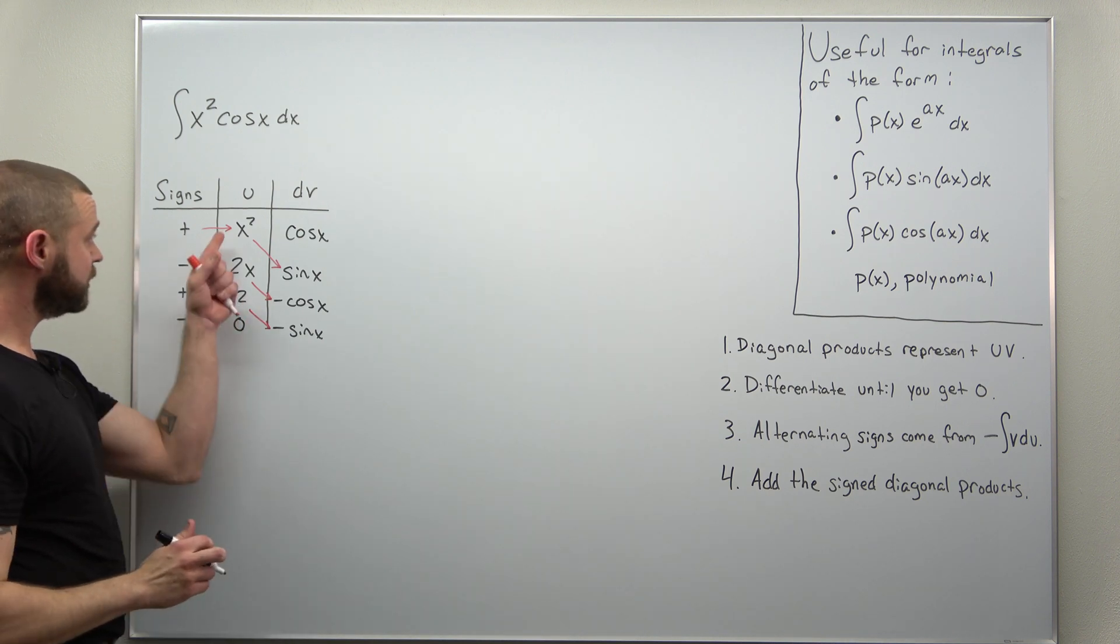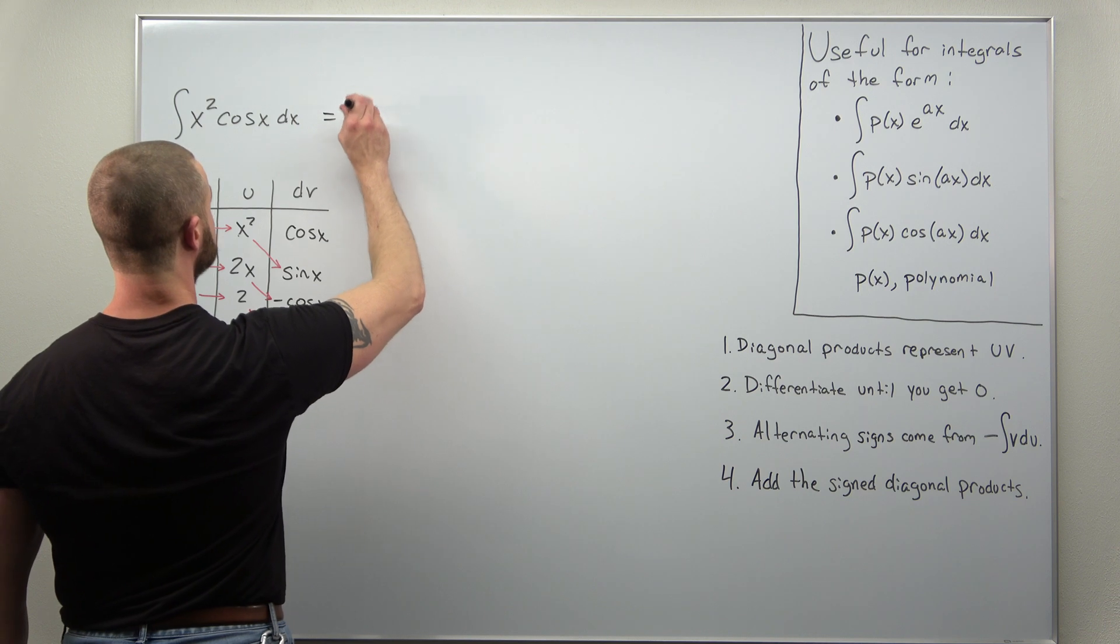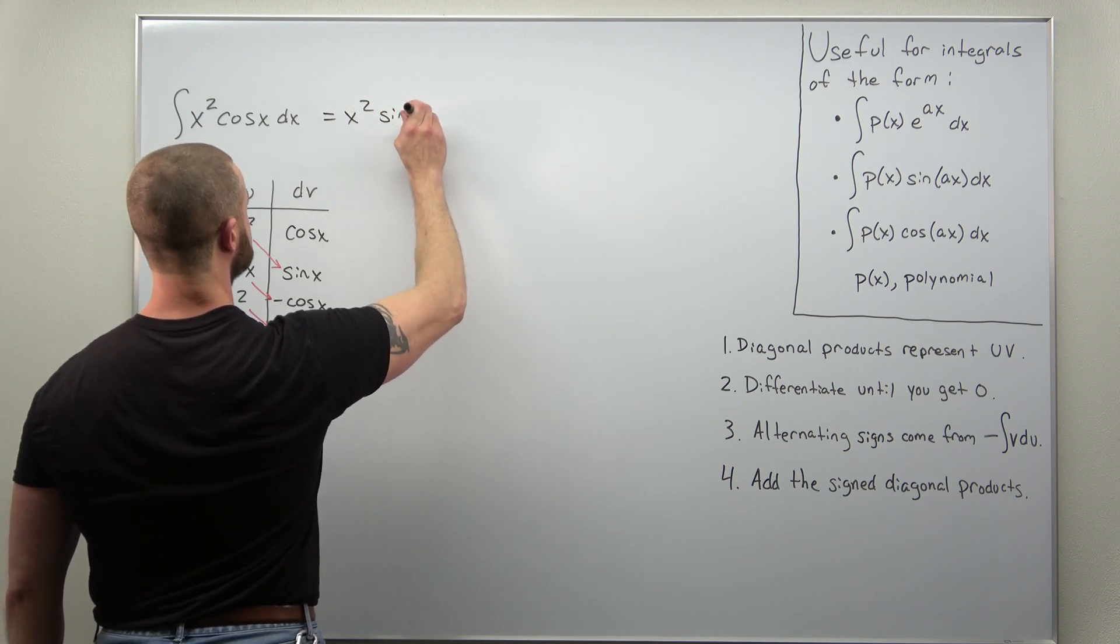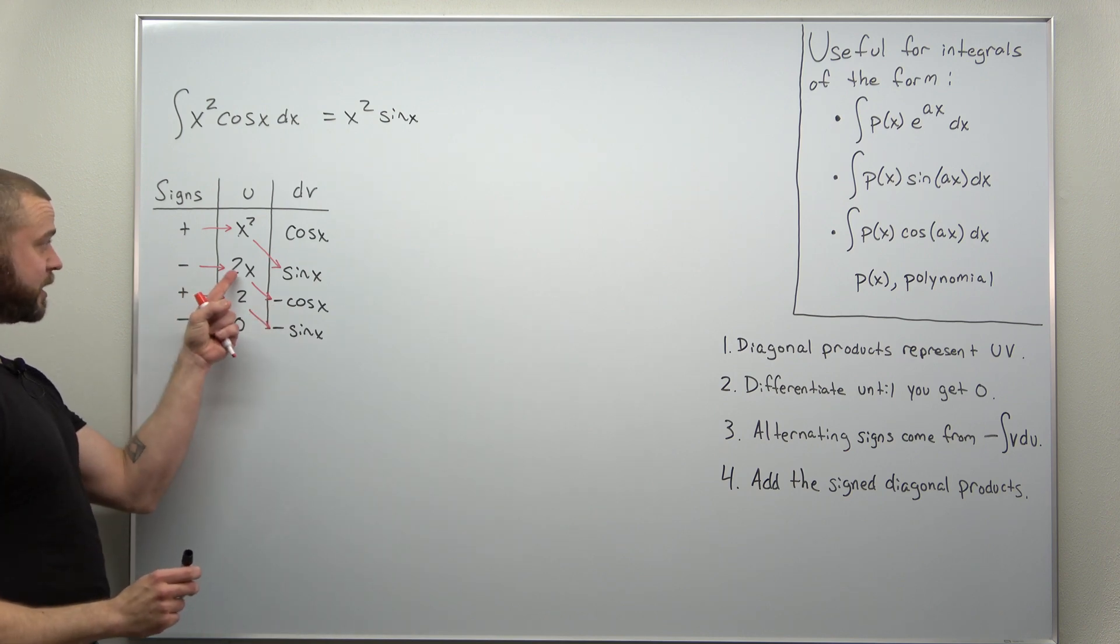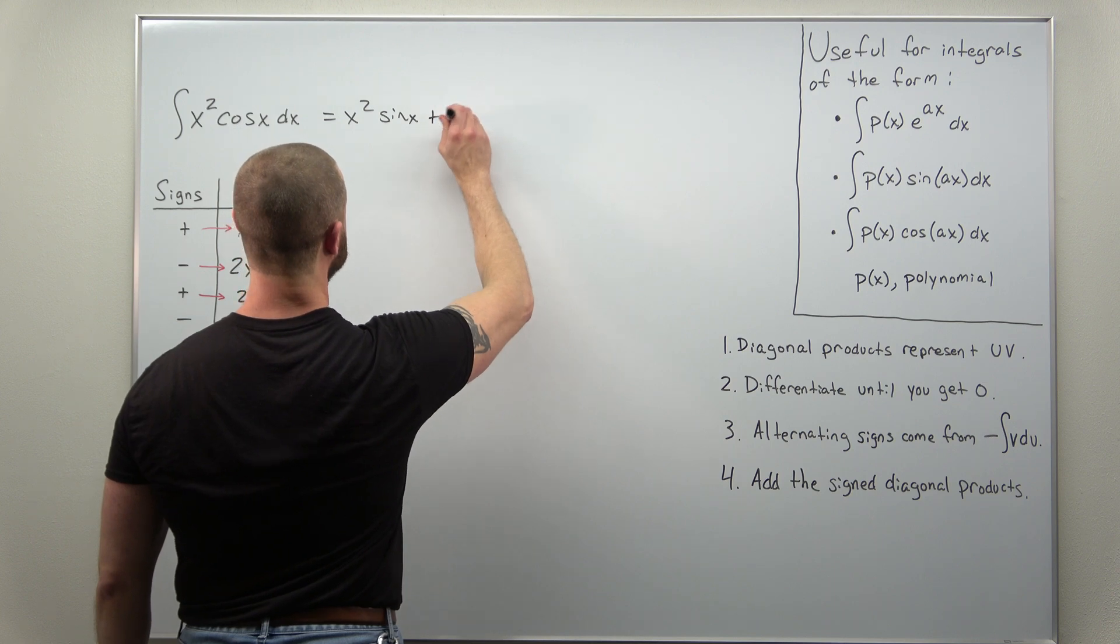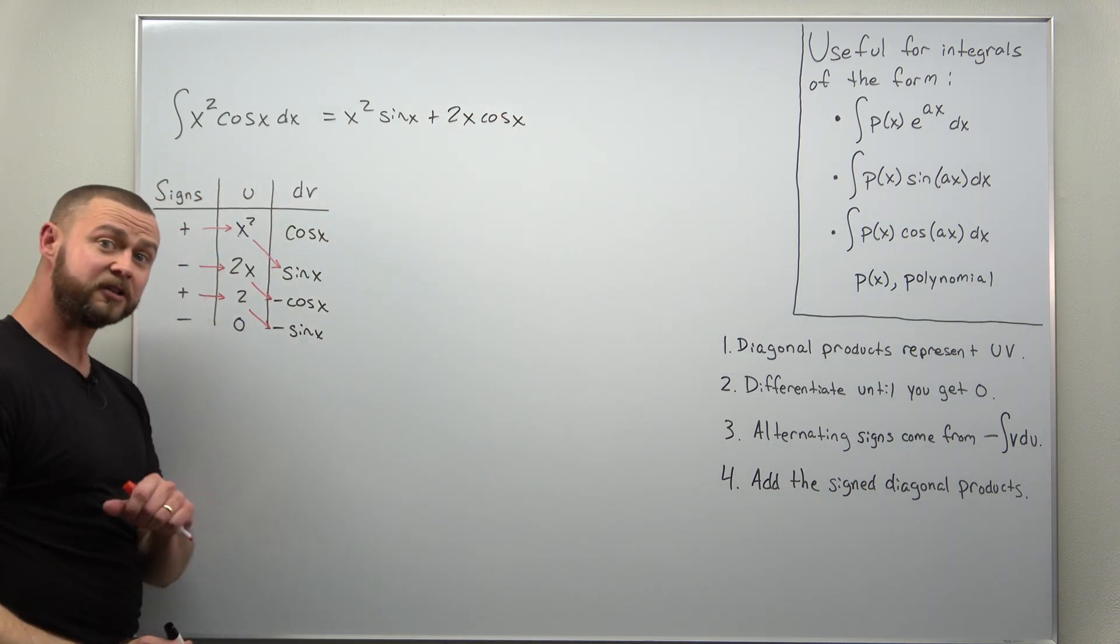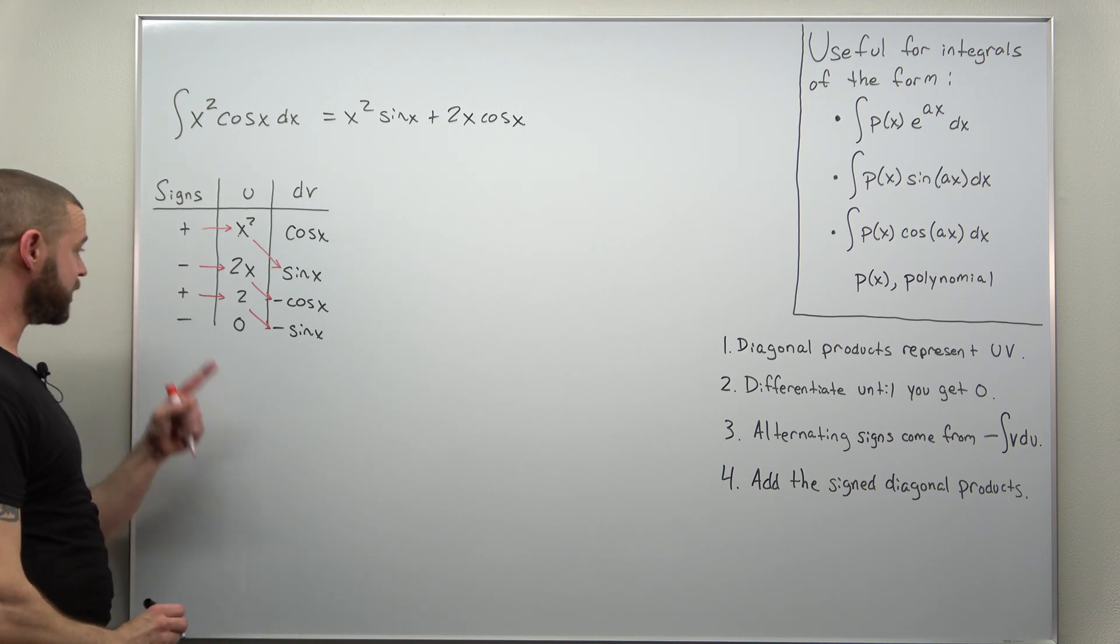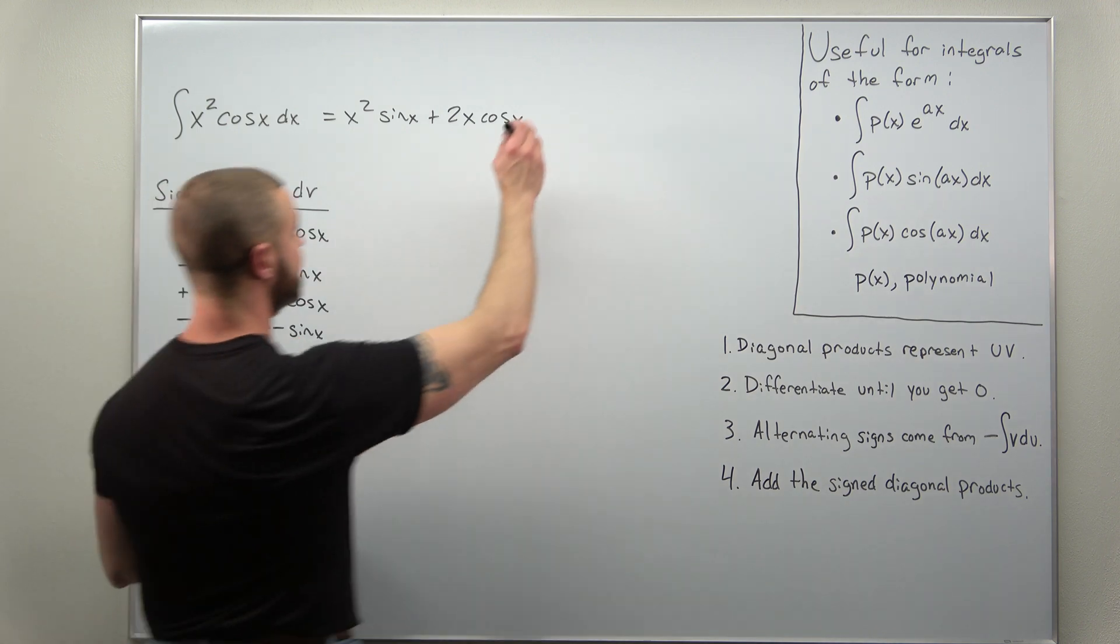And if we extract our answer, we have positive x squared times sine of x. Next one, we have a negative and another negative. Those cancel. So that's really going to be plus 2x cosine of x. And then our last signed diagonal product. We have a negative and that's going to be negative 2 times sine of x.